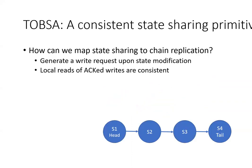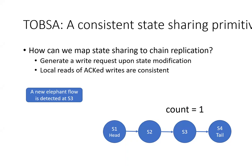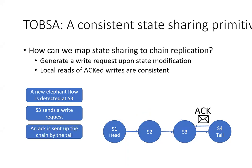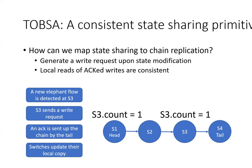How does all that work with stateful applications? Let's go back to our adaptive routing example, now running on four switches. Each switch processes its own packets independently. When a new elephant flow is detected, that switch increments its counter and generates a write request, sending it to the head of the chain. The write travels down the chain, and once it gets to the tail, the tail generates an acknowledgement to notify that the update is committed. Each switch then acts on the latest acknowledged value of the counter.